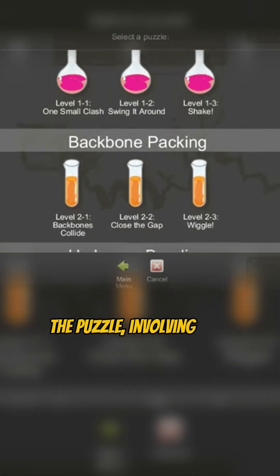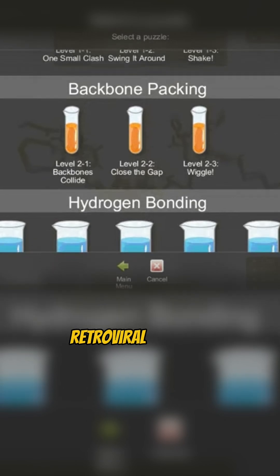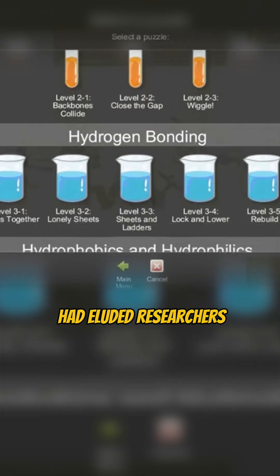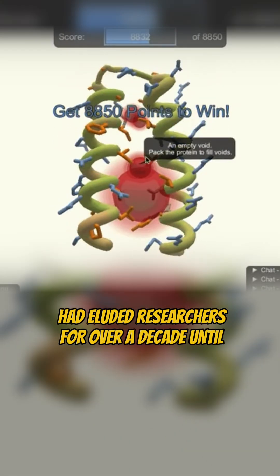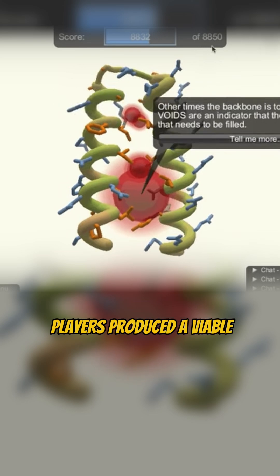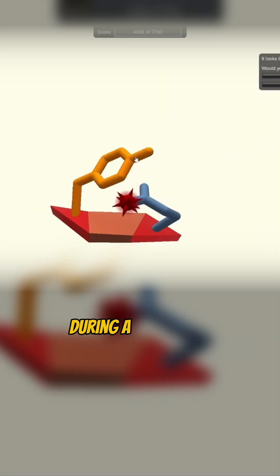The puzzle, involving the MPMV retroviral protease, had eluded researchers for over a decade until Foldit players produced a viable model in just 10 days during a 3-week challenge.